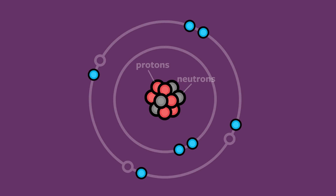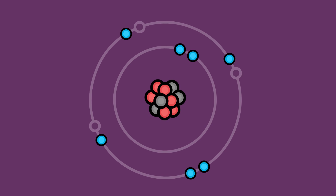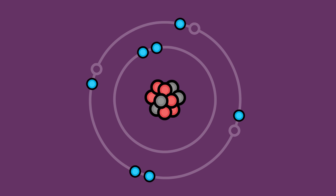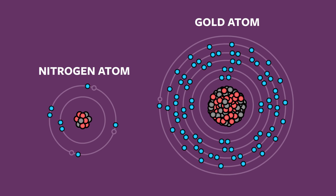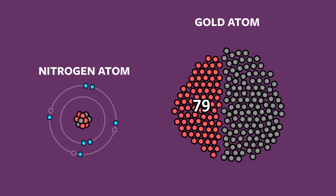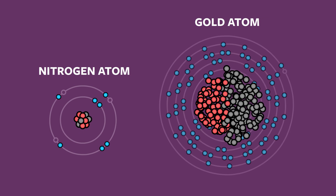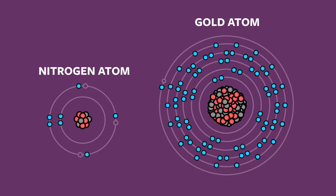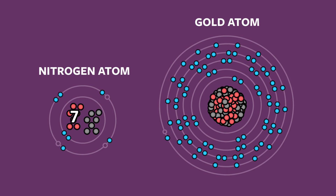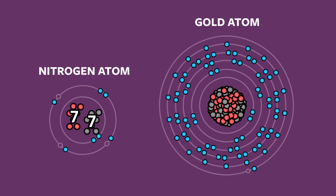Protons and neutrons are what give the atom most of its weight — or its mass, technically. For example, a gold atom has 79 protons and typically 118 neutrons. This is far heavier than a nitrogen atom, which only has 7 protons and usually 7 neutrons.